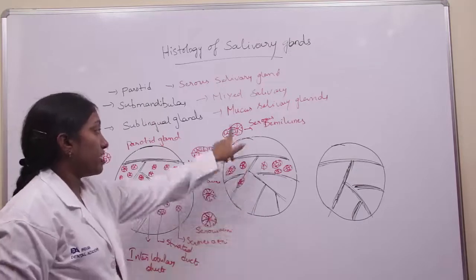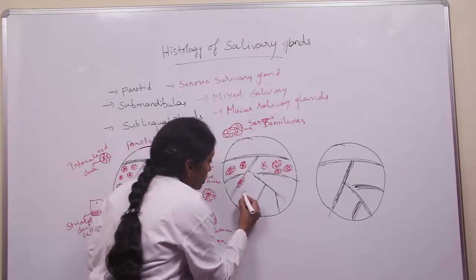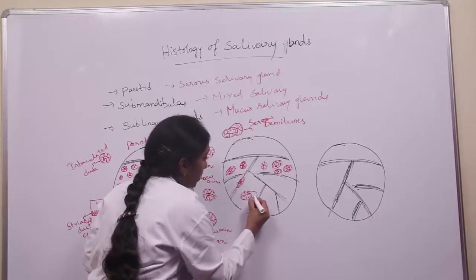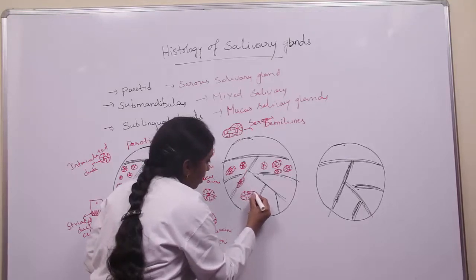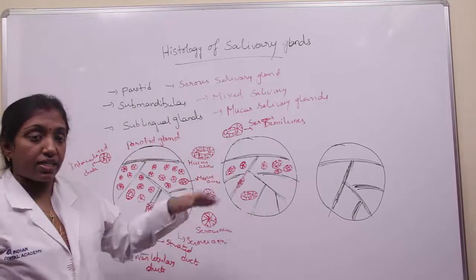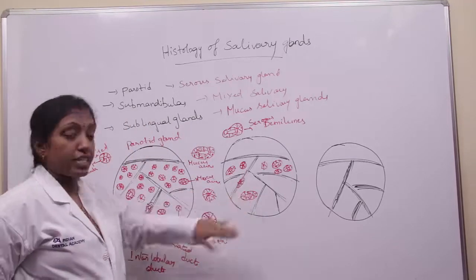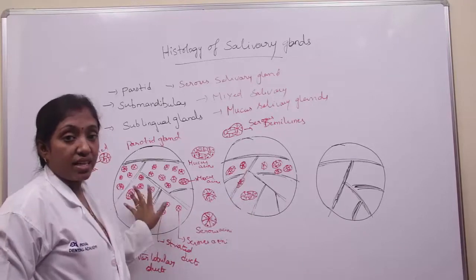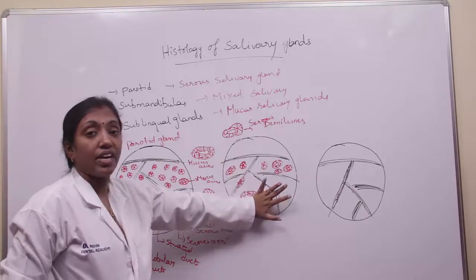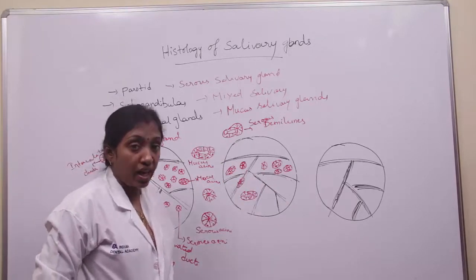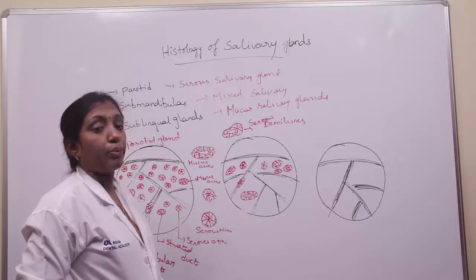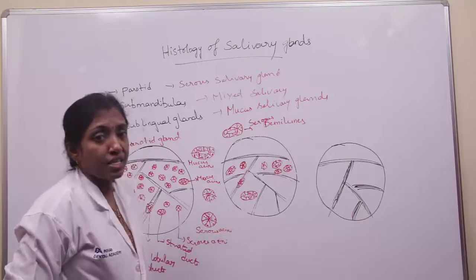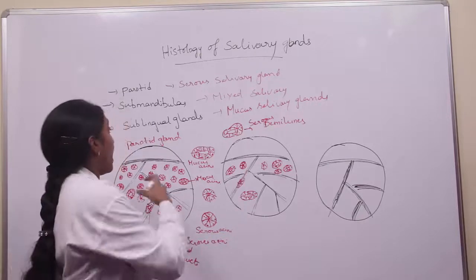The mucous acini capped by serous acini is the important characteristic feature of the submandibular gland. Serous demilunes can be seen only in the submandibular gland — that means only in the mixed salivary gland — where the mucous acini are capped by the serous acini.